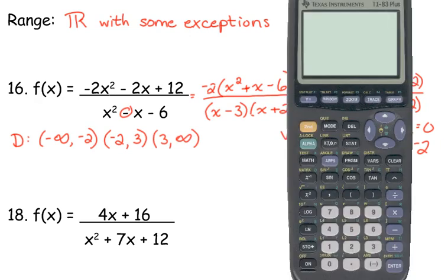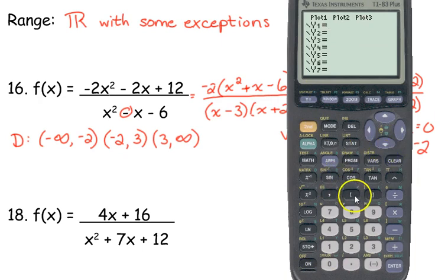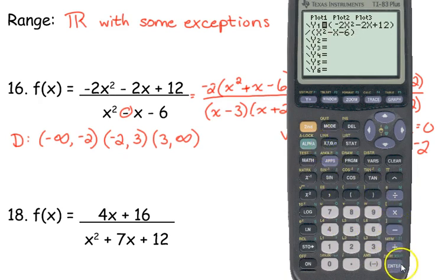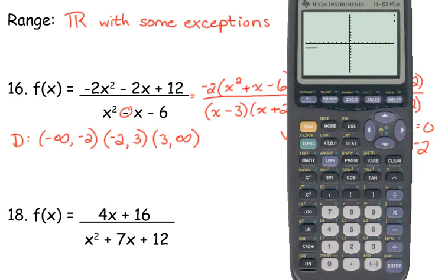For the range, I said we've got to look at the graph. Let's type it in. Make sure you put the entire numerator in parentheses — if you don't, you will not get the correct function. Close your parentheses around the numerator, divided by, then put the entire denominator in parentheses. Again, if you do not put those parentheses in, you will not graph the correct function. Let's graph it. There's our vertical asymptote at negative 2, and there's our vertical asymptote at positive 3.